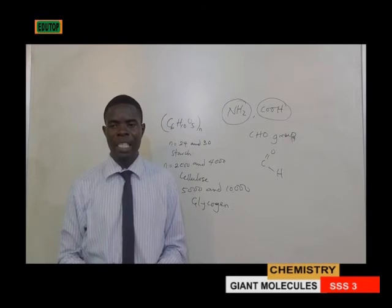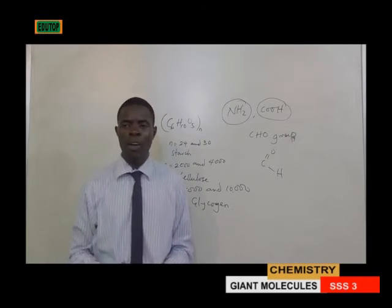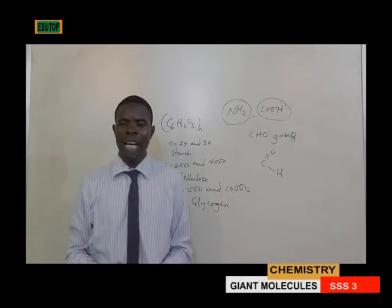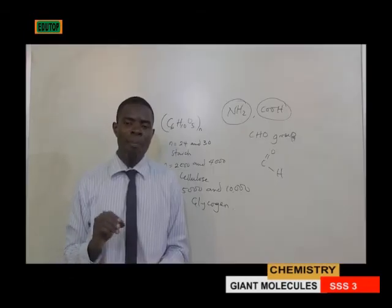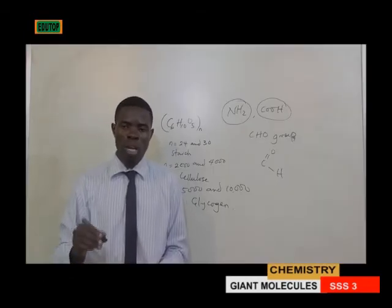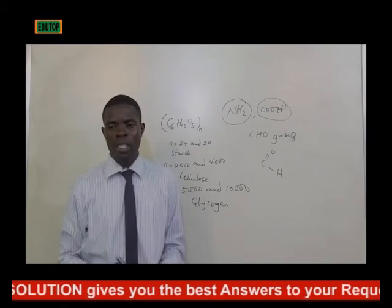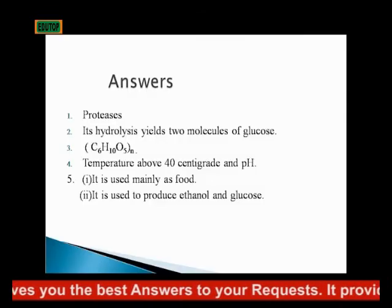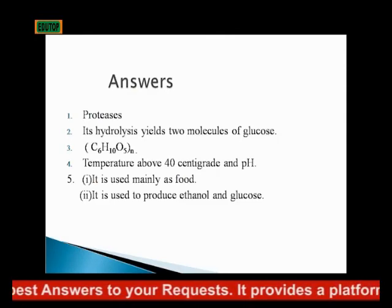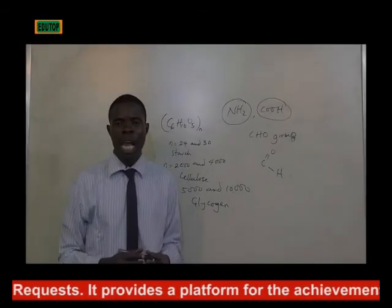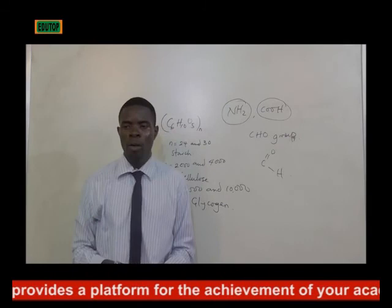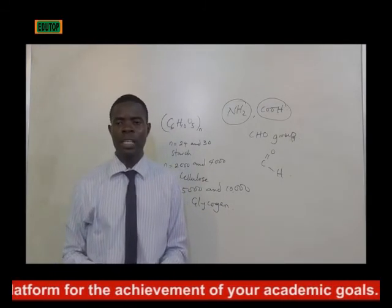The products obtained on hydrolysis of maltose are two molecules of glucose. When maltose is subjected to hydrolysis, you have two molecules of glucose. The formula of polysaccharides is (C₆H₁₀O₅)n.